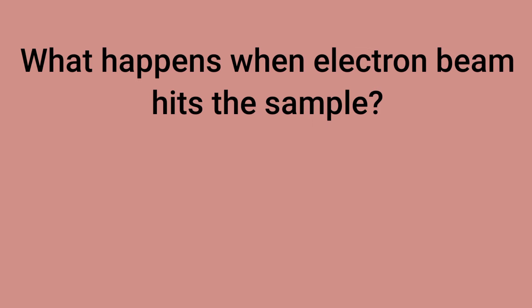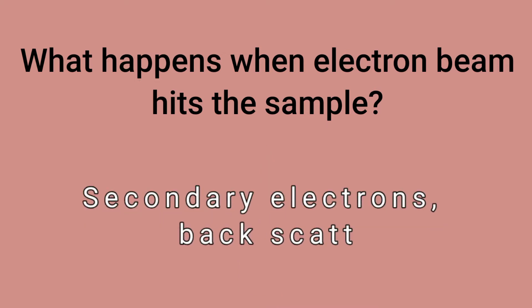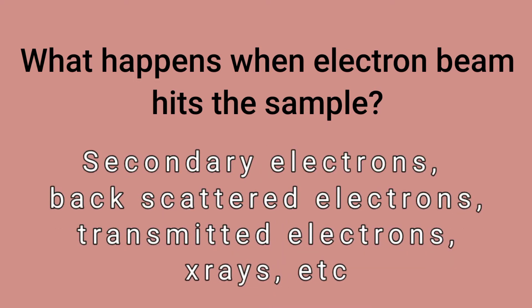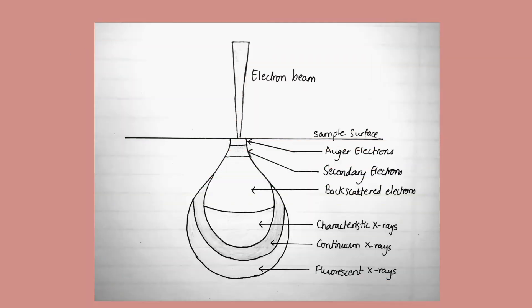What happens when the electron beam hits the sample? Different types of signals are produced, including secondary electrons, backscattered electrons, transmitted electrons, X-rays, and others. If asked to show the diagrammatic representation of this process, here is the diagram you are required to draw — make sure you label all the signals properly.